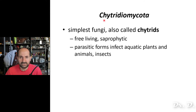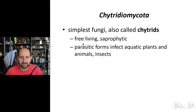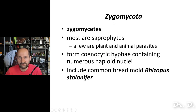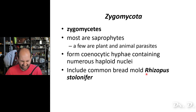The Chytridiomycota are the simplest fungi, also known as chytrids. They can be parasitic — there are parasitic forms in animals, insects, and aquatic plants. The Zygomycota, known as zygomycetes, are mostly saprophytes and include the bread mold Rhizopus stolonifer — the common bread mold.